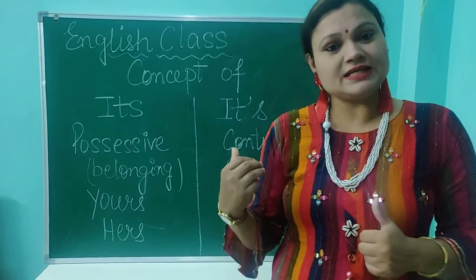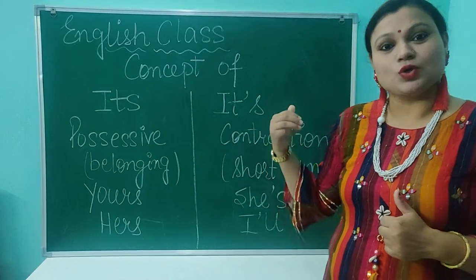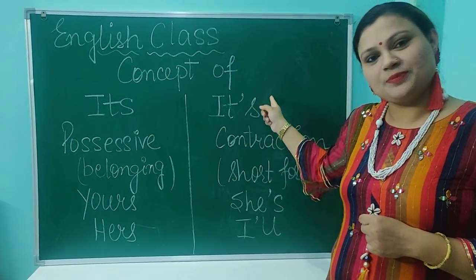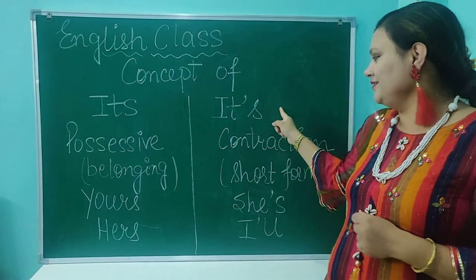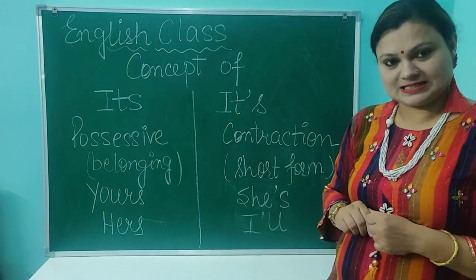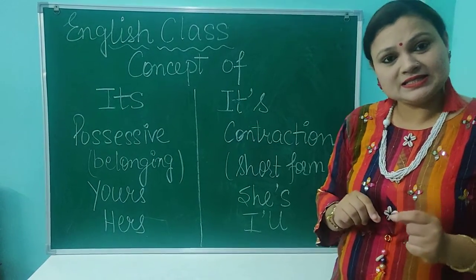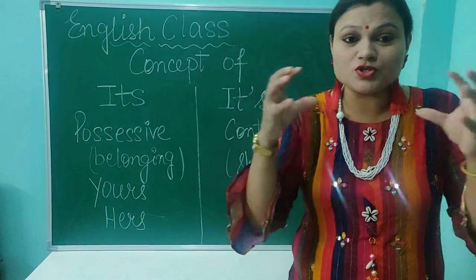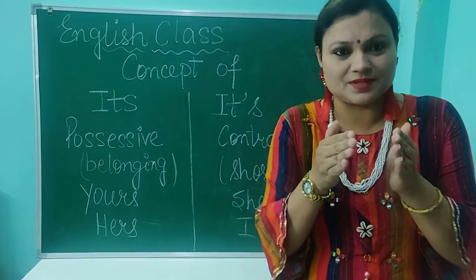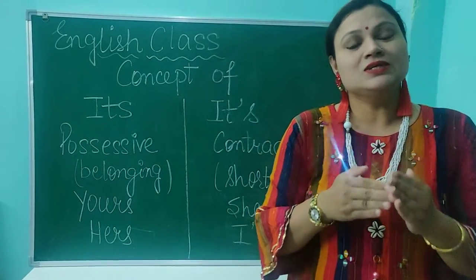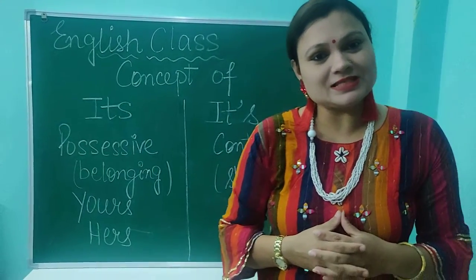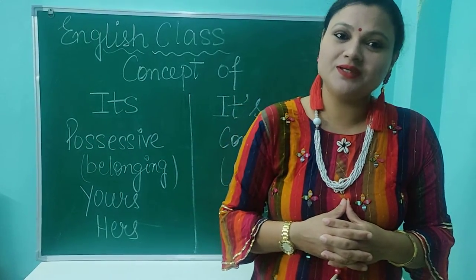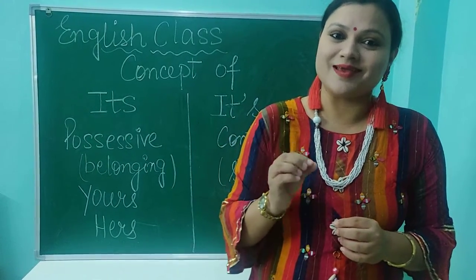On the other side, if you see 'it's' — the contraction — it's I-T, apostrophe mark, then S. It is a short form. Contraction means when you contract or shorten something. So we use this word as a contraction: I-T apostrophe S.